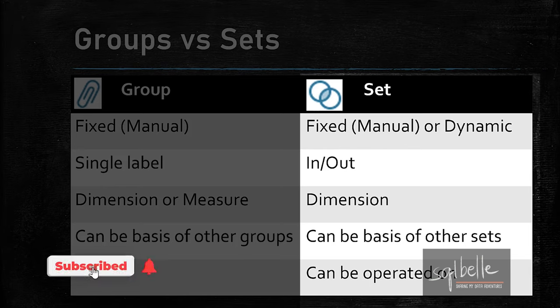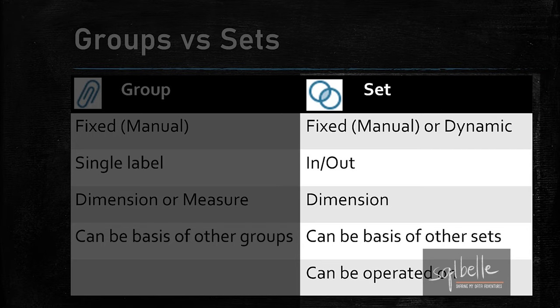Now let's look at sets. Sets allow us to organize data and put related dimension values together. Unlike groups, you can only create sets on dimension values, not measure values. Also unlike groups, sets are more flexible and can allow for automatic member assignments — these can be automatically assigned based on conditions, thresholds, or even user interactivity. We can also perform operations between sets, introducing new and sometimes simpler ways of analyzing data.